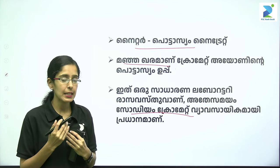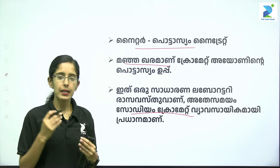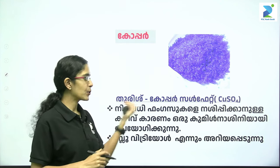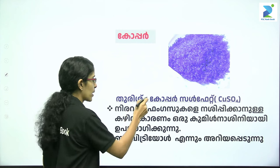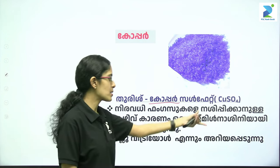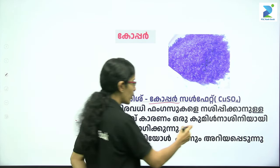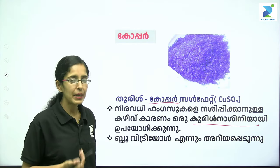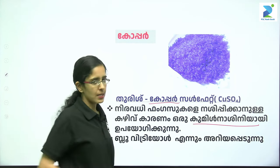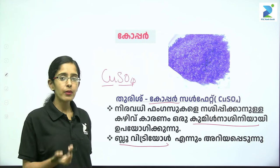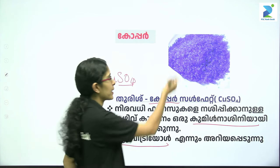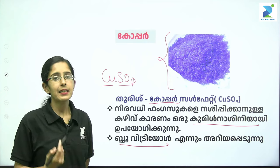Potassium dichromate or potassium chromate can be used in a chemical laboratory. We have two components. The first one is Thurish — it is Copper Sulfate. The first thing they call it is copper sulfate, also known as blue vitriol. Its color is blue.